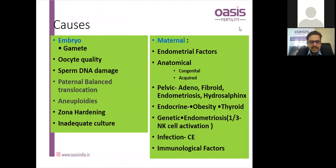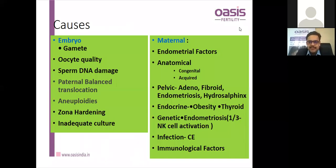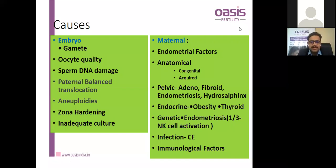Regarding embryo causes, they relate to gamete quality — oocyte quality, sperm DNA damage, paternal and maternal balanced translocations, aneuploidy, zona hardening and inadequate culture. Maternal factors include non-receptive or out-of-phase endometrium, congenital and acquired anatomical causes. Pelvic causes include adenomyosis, fibroid, endometriosis, and hydrosalpinges which may cause recurrent implantation failure.